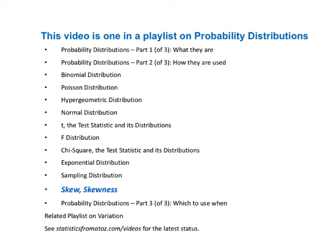This video is one in a playlist on probability distributions. The playlist is planned to include a three-part series on distributions as a whole, plus individual videos on nine different types of distributions and this one, which is a property of distributions. There will be a related playlist on variation, which is also a property of distributions. See StatisticsFromAtoZ.com/videos for the latest status of this work.